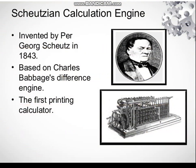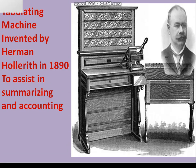The Scheutz Calculating Engine was invented by Per Georg Scheutz in 1843. It is based on Charles Babbage's Difference Engine and was the first printing calculator. The Tabulating Machine, invented by Hermann Hollerith in 1892, assisted in summarizing and accounting.